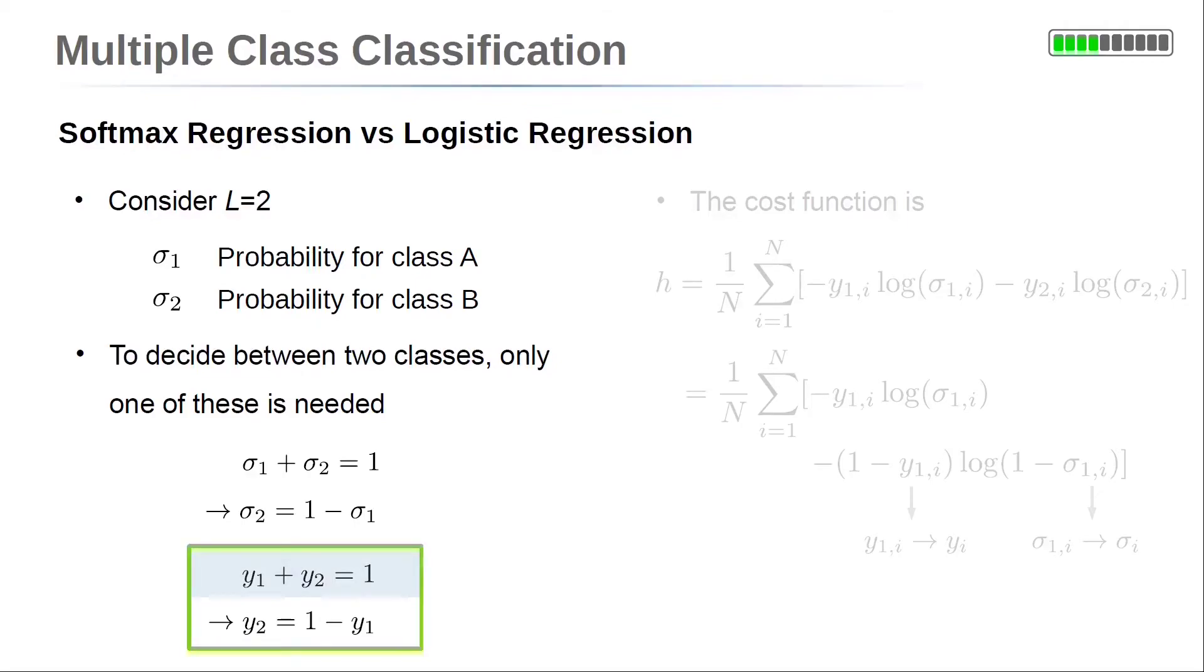If y_1 = 0, y_2 needs to be 1, because the data point is either class A or class B. Similarly, if y_1 = 1, y_2 needs to be 0. So y_1 + y_2 = 1, and thus y_2 = 1 - y_1.